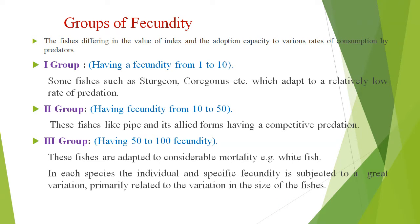What are the groups of fertility? Fishes differ in the value of index and their adaptation capacity to various rates of consumption by predators. Group one fishes have fertility from 1 to 10. Some fishes such as Sturgeon and Coregonus adapt to a relatively low rate of predation. Group three fishes are adapted to considerable mortality, e.g. whitefish.